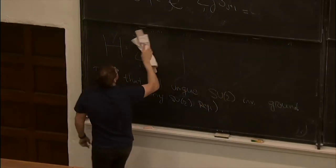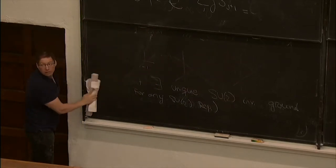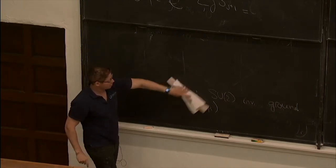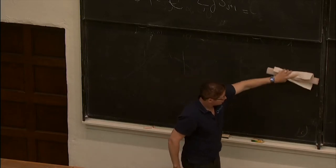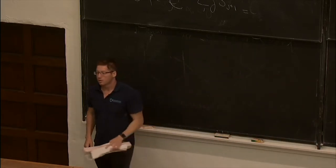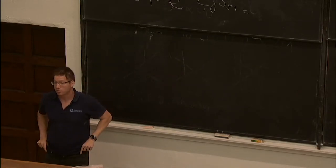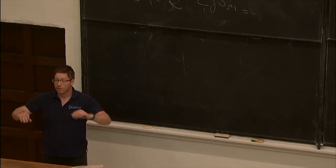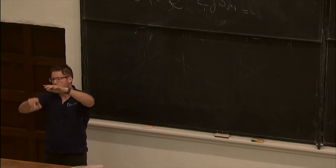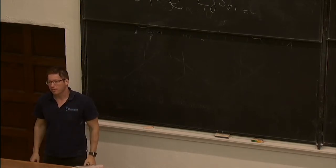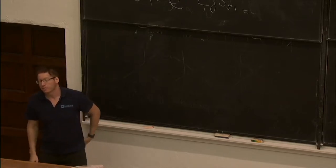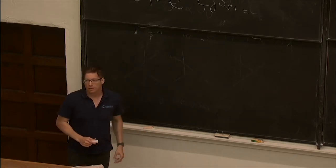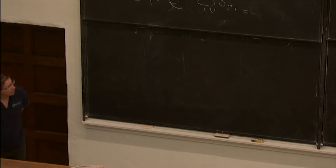A student asks whether the upper bound of 1/L is tight or whether it could be exponentially small. The answer is that we don't know a priori: the 1/L estimate came from 1/L² times L terms of order 1, but those could cancel and the gap could be even much smaller than 1/L. The analysis does not distinguish these scenarios.